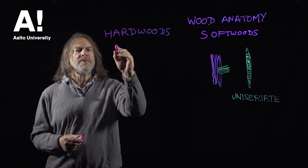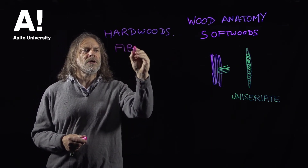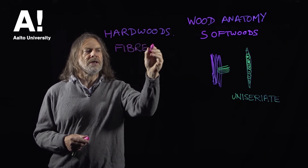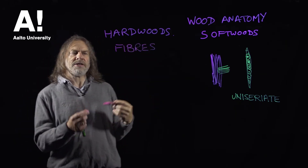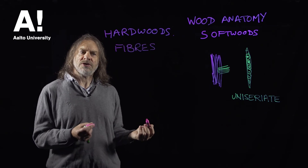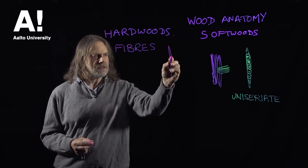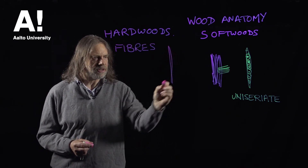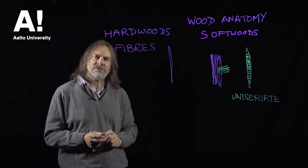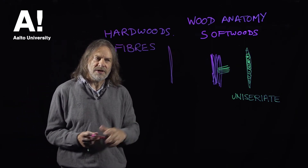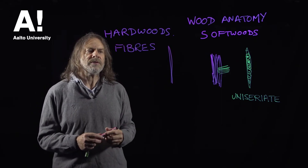Hardwoods are formed of fibres, which look like tracheids in a way, but they don't have any conduction function at all. They're long, thin cells — not as long as tracheids — and they don't really have a hollow interior. They don't have a conduction function; they purely have a support function.